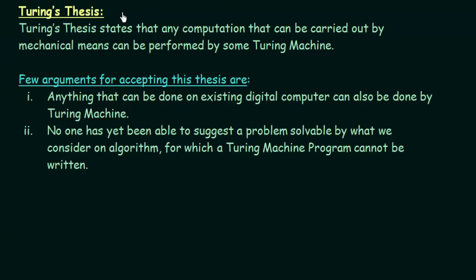The next thing we need to discuss is Turing's thesis. Turing's thesis states that any computation that can be carried out by mechanical means can be performed by some Turing machine. From this you can understand how powerful a Turing machine actually is.